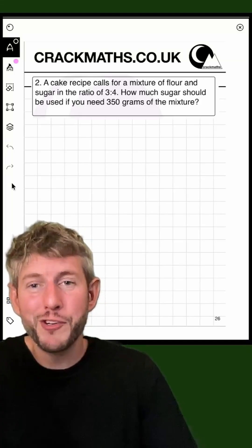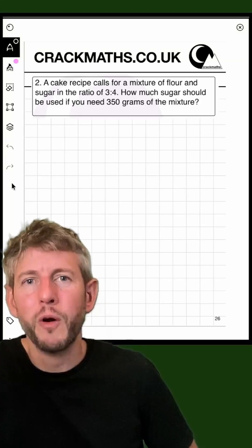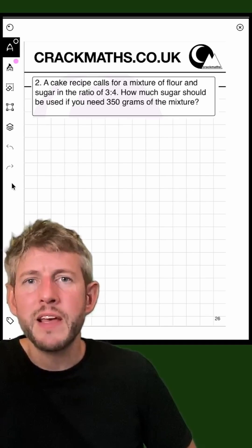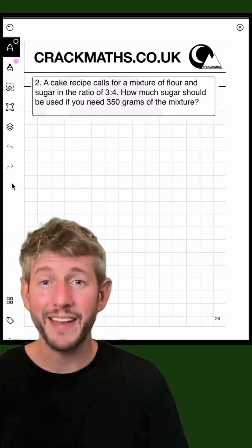A cake recipe calls for a mixture of flour and sugar in the ratio 3 to 4. How much sugar should be used if you need 350 grams of the mixture in total?